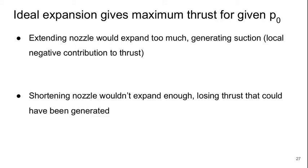Let's start with the simplest case, the case for ideal expansion. This is going to give us the maximum thrust for some given atmospheric pressure. Because if we extended the nozzle more, we'd expand too much and locally generate some suction or negative contribution to thrust because the pressure would be too low.